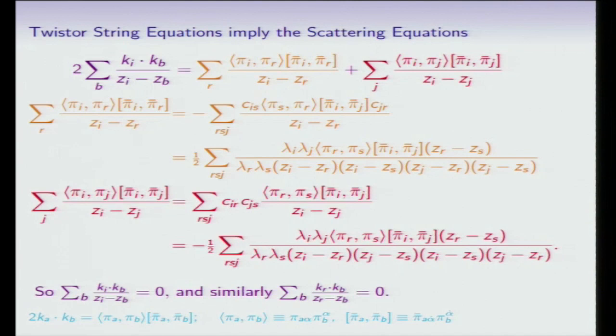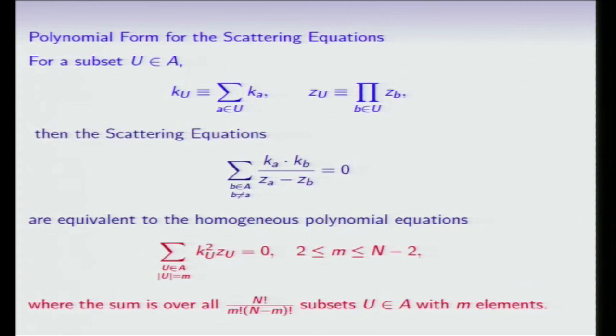So lastly, I would like to talk about the polynomial form of the scattering equations. Remember, this was the original form, just at the massless case, and so we take a subset of all of the points, k_A, and we just sum over the a in that subset, we call that k sub u. We also define a variable z sub u, which is a product of the z's over that subset, and our observation is that these scattering equations are equivalent to the homogeneous polynomial equations, k squared z_u equal to 0, where m is running from 2 to n minus 2, and the sum here is over all of that many subsets of this subset u, which has m elements. So you have m different equations, where m is taking on these different values.